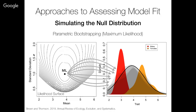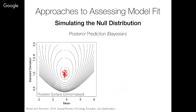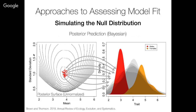Posterior prediction is very similar. Going through a full comparison of maximum likelihood and Bayesian approaches is beyond what we want to cover today. In a Bayesian framework, we're drawing values from a posterior distribution — we have a set of values that represent the uncertainty in our estimate. These red dots represent hypothetical parameter values drawn after conducting MCMC on this posterior distribution. In posterior prediction, we then use those values to simulate potential datasets. The only practical difference between these frameworks — ignoring the philosophical differences for now — is how we draw the parameter values we use to simulate our null distribution.